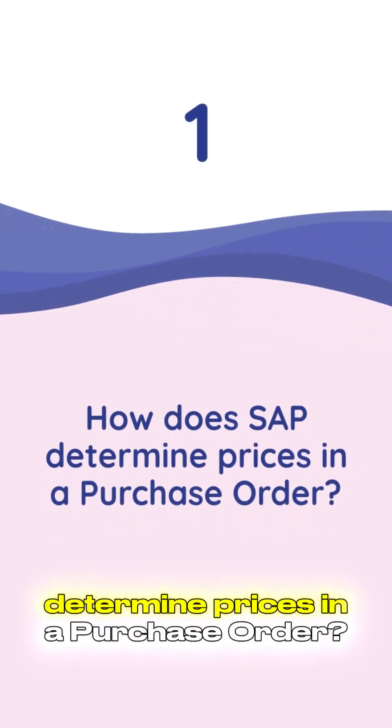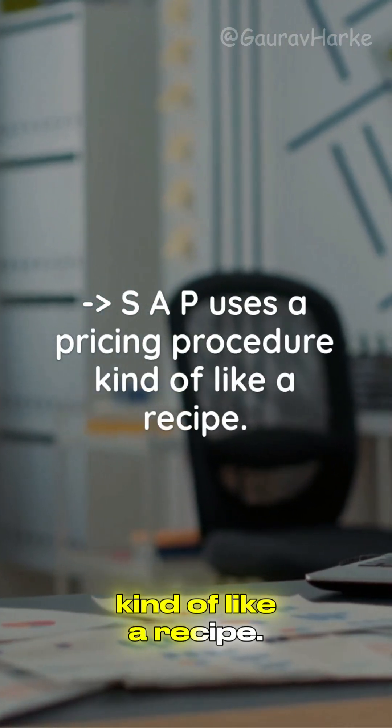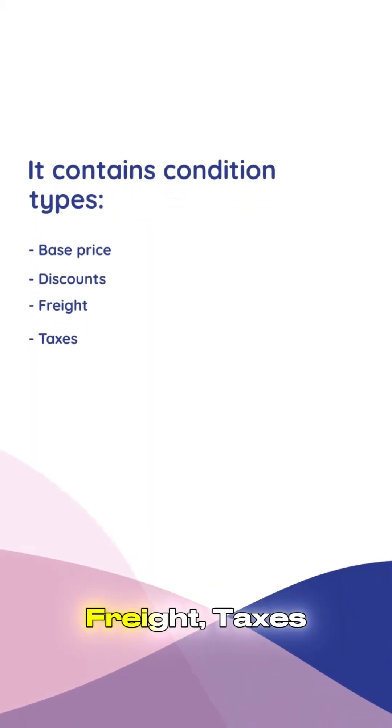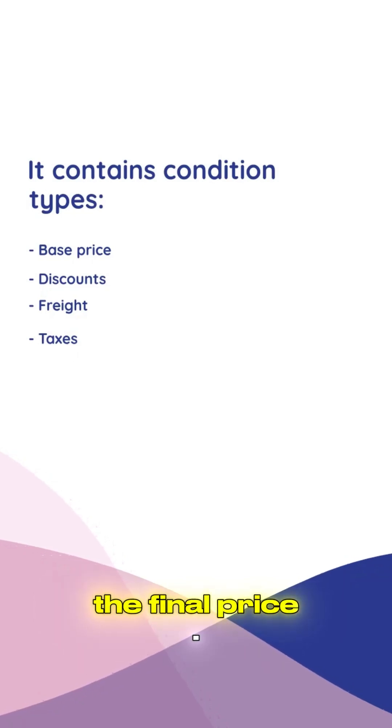Question 1: How does SAP determine prices in a purchase order? SAP uses a pricing procedure, kind of like a recipe. It contains condition types like base price, discounts, freight, taxes, and applies them in a sequence to calculate the final price.